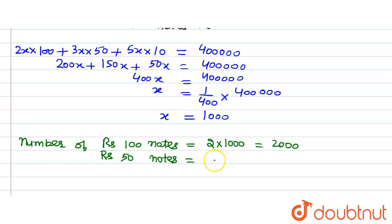Number of rupees 50 notes is equals to 3x, 3 multiplied by 1000 is equals to 3000.